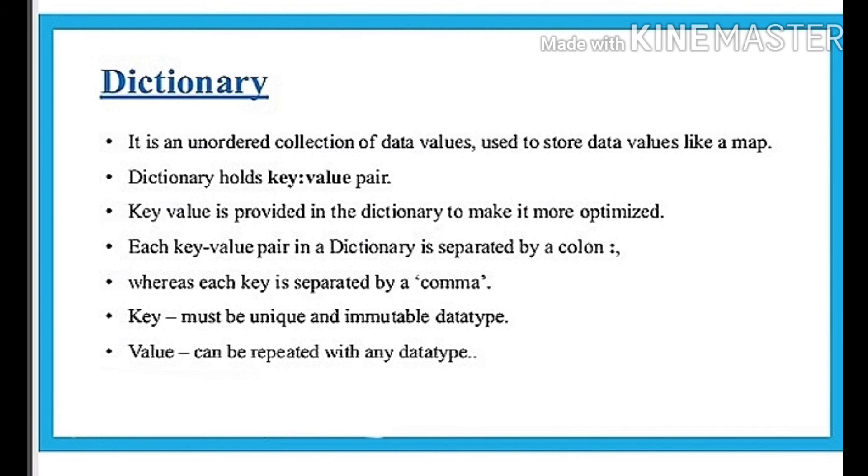Dictionaries hold key-value pair. Key value is provided in the dictionary to make it more optimized. Each key-value pair in a dictionary is separated by a colon, whereas each key is separated by a comma. Keys must be unique and immutable. Value can be repeated with any data type.